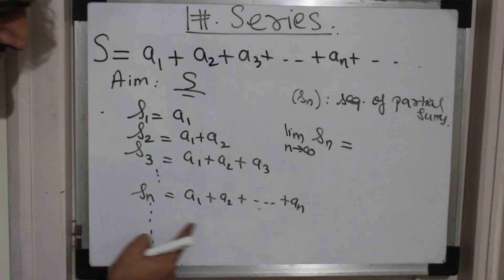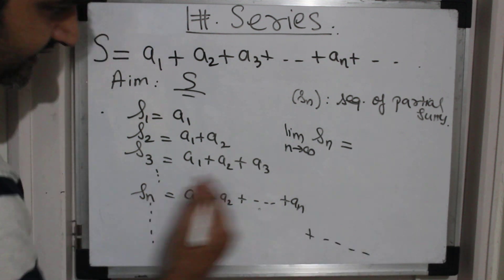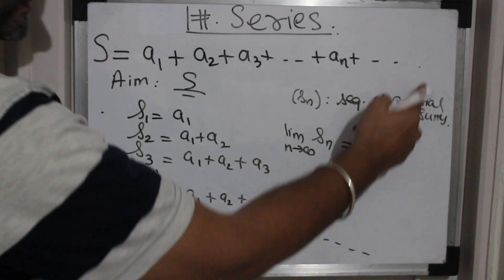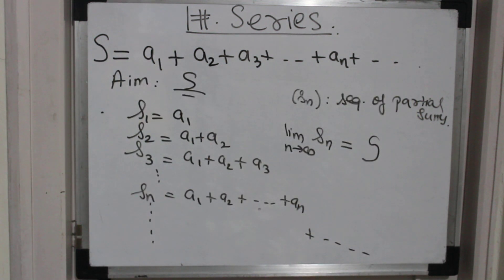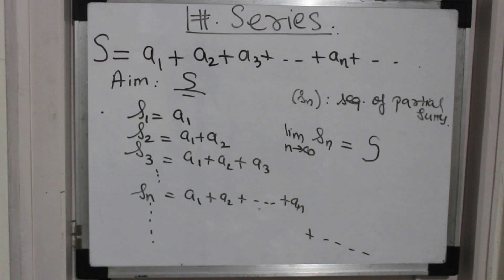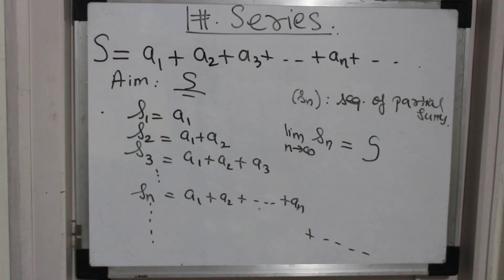Now observe: what is the limit of Sₙ as n goes to infinity? As n goes to infinity, this sequence will converge to my S — the infinite sum. So the sum of a series is nothing but the limit of a sequence of partial sums. Whenever you have a series, you can always construct this sequence by simply adding terms. Once you have Sₙ, you take the limit and what you get is the sum of the series. That's how you define the concept of a series.